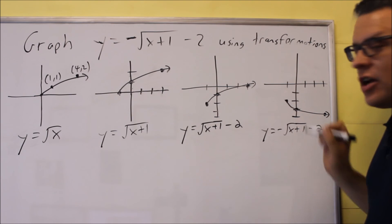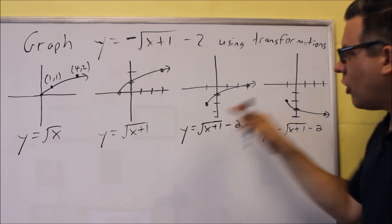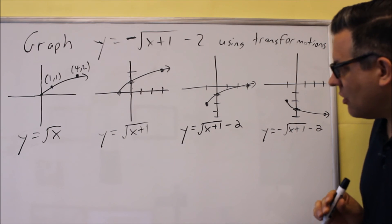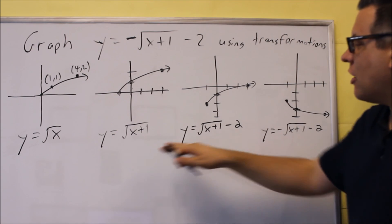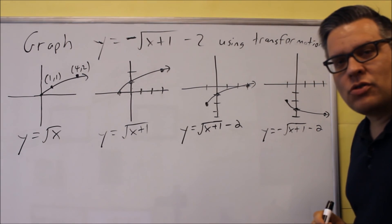This would be what your final graph would look like. It took into account all these different transformations. So again, it's good to draw these out successively like this, so that way you can see exactly what each of those transformations are doing.